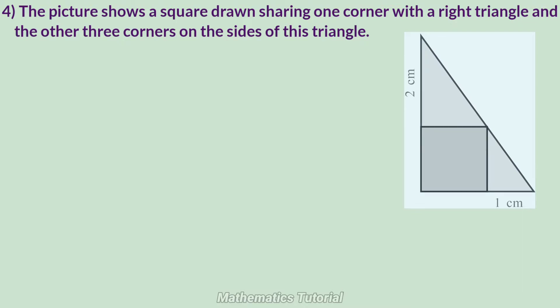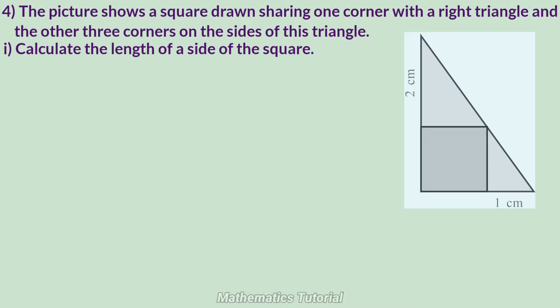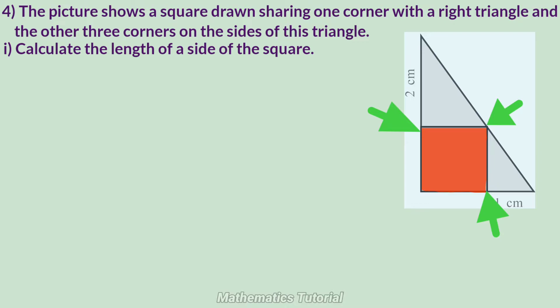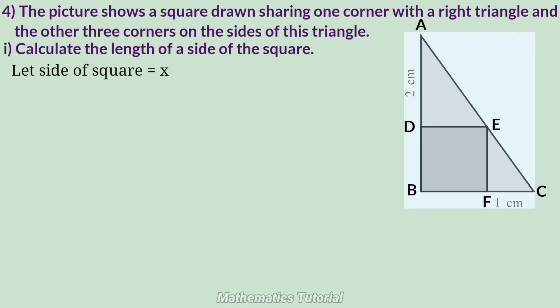The picture shows a square drone sharing one corner with a right triangle, and the other three corners on the sides of this triangle. First question: calculate the length of a side of this square. The figure is labeled A, B, C, D, E, M. The square has one side equal to x.